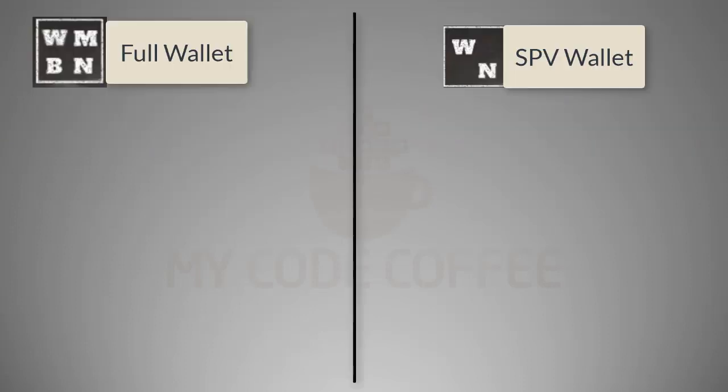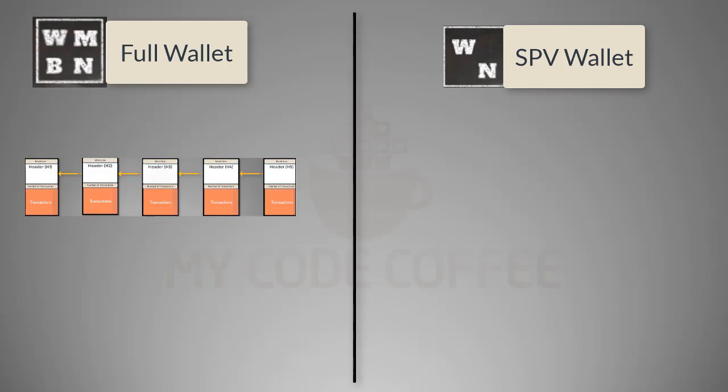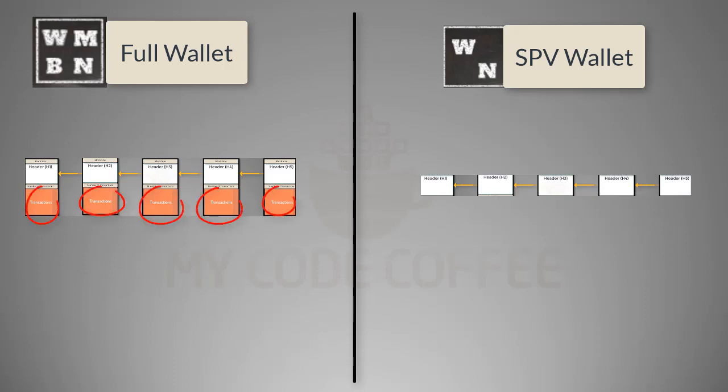Now if we compare SPV node with full node, we see that whereas a full node maintains the full blockchain, an SPV node only maintains the chain of headers of the blocks. Whereas a full node downloads all transactions, an SPV node downloads selective transactions because they are interested in only those transactions which belong to the users of its wallet.